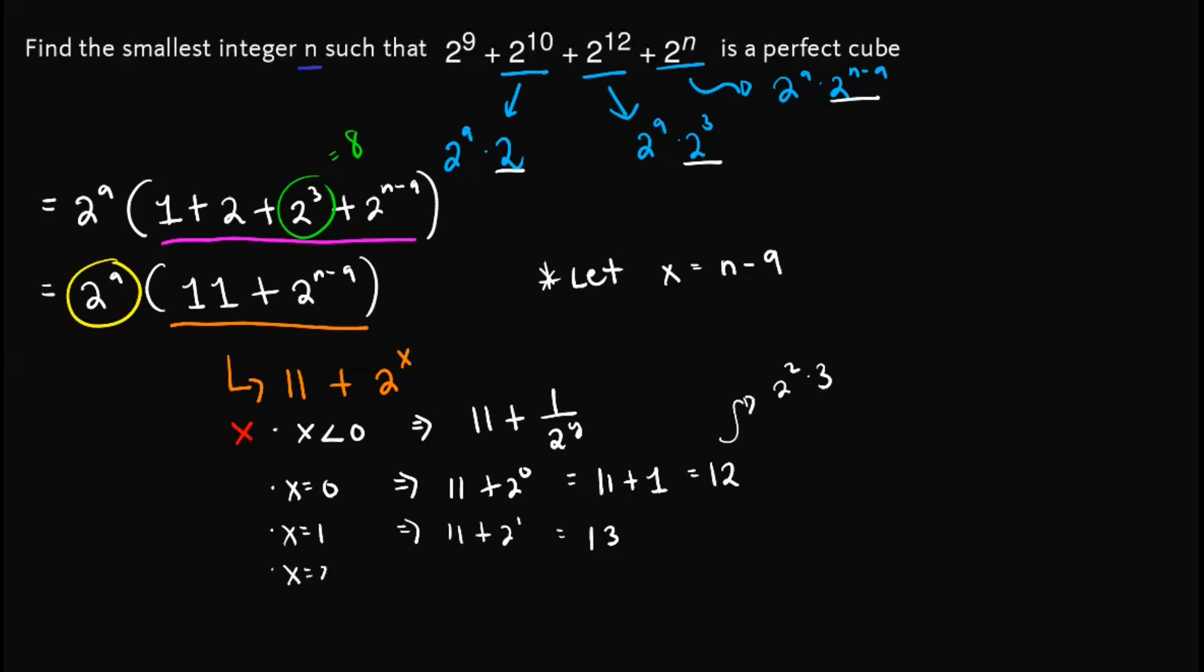If x is equal to 2, then 11 + 2^2 would give us 15, which is, again, not a perfect cube since this one factors into 3 times 5, so not a perfect cube.